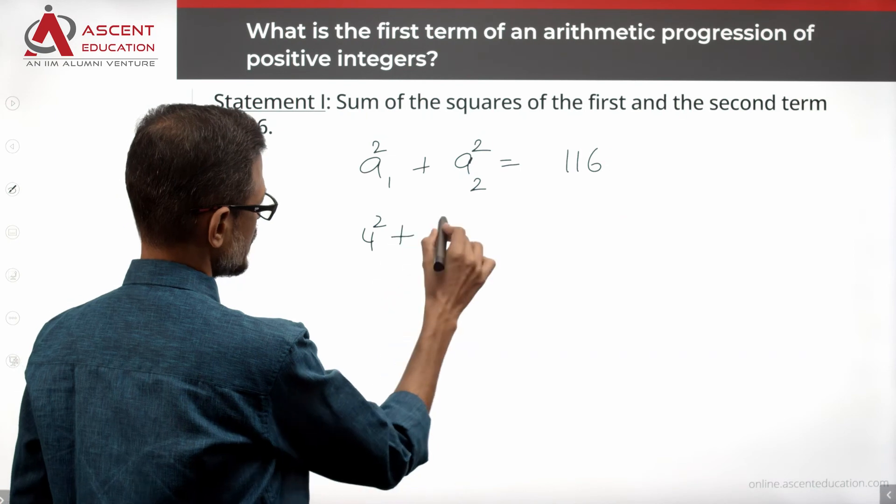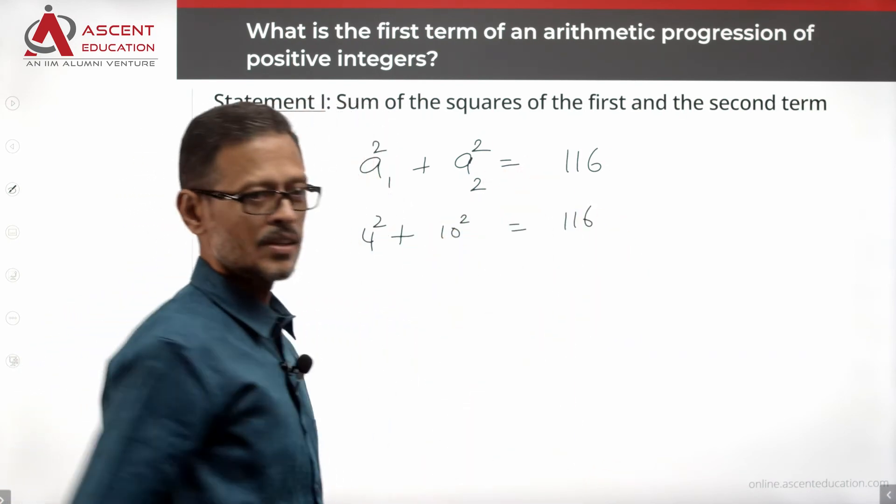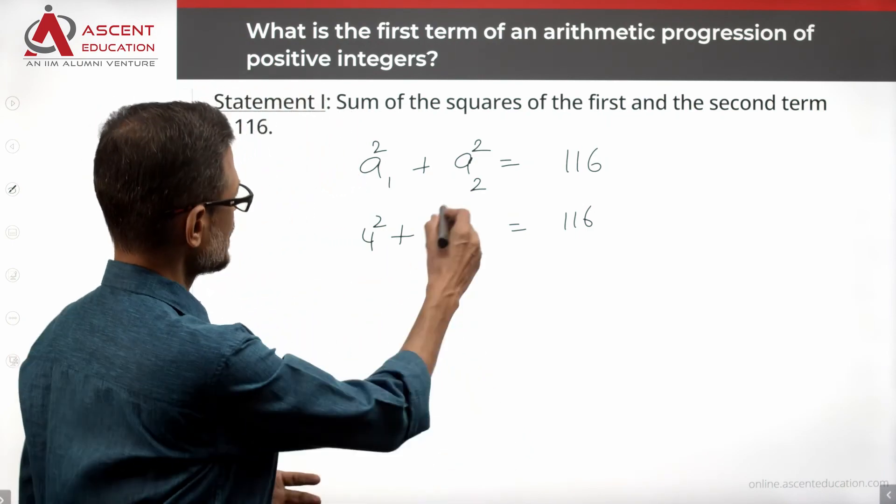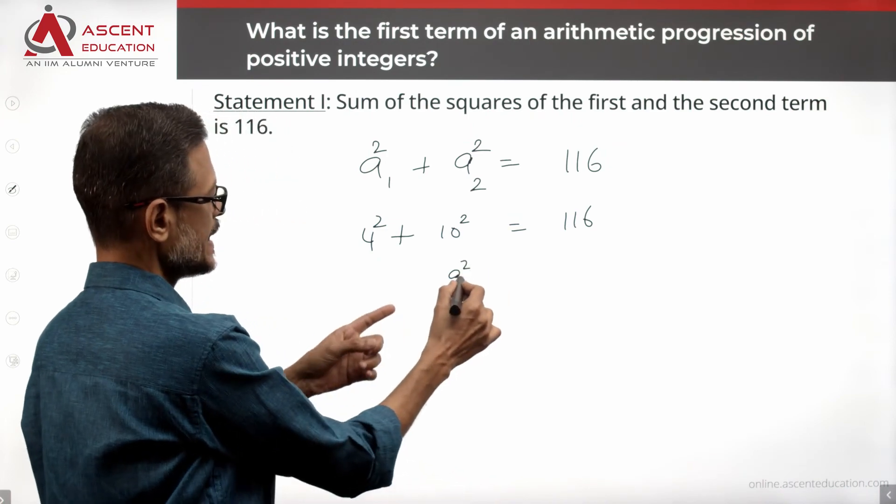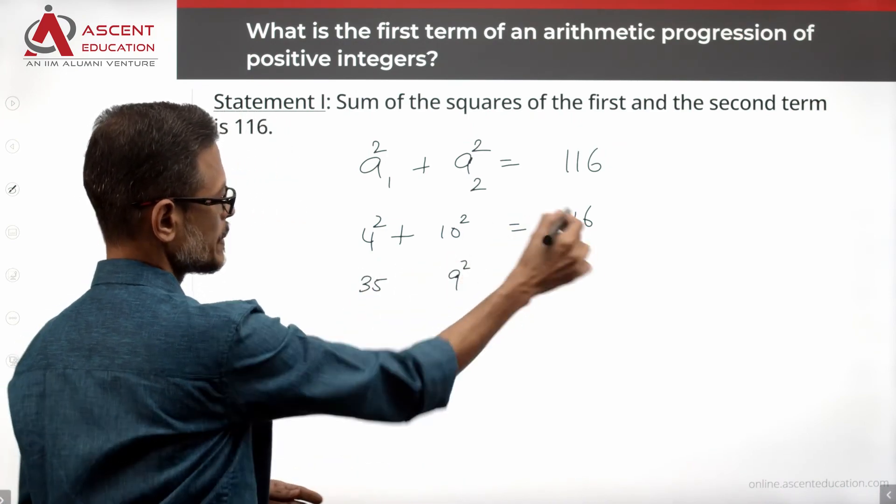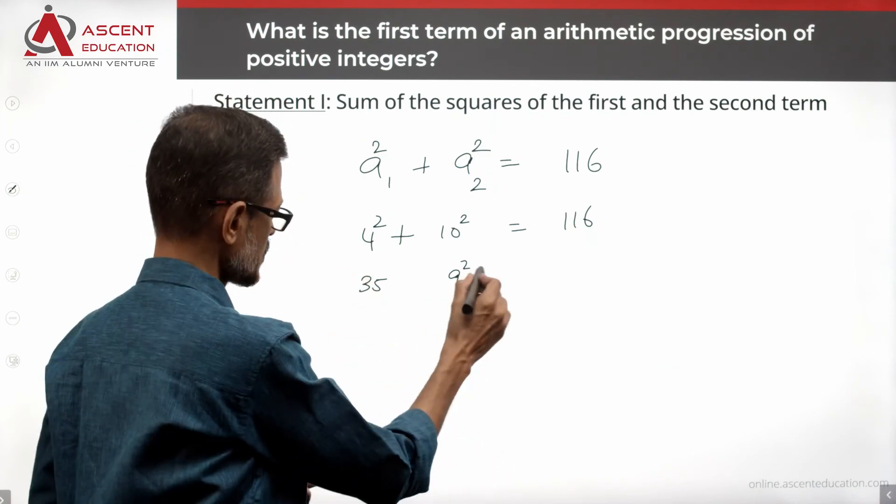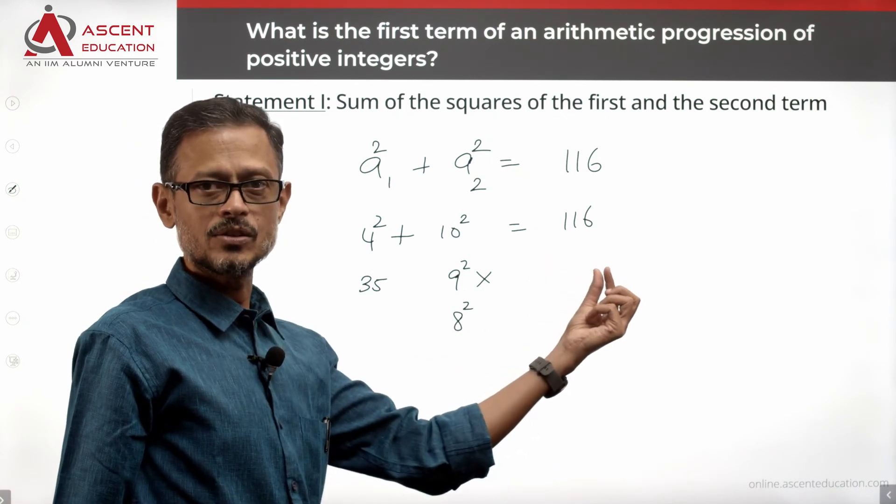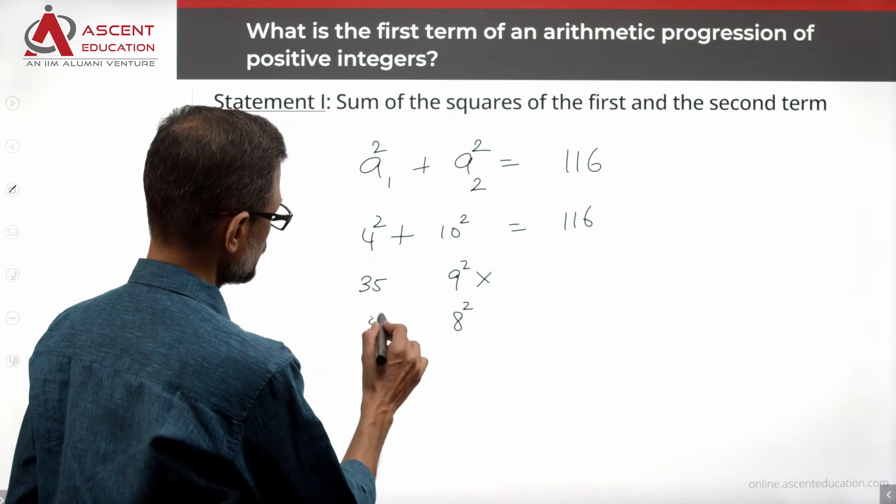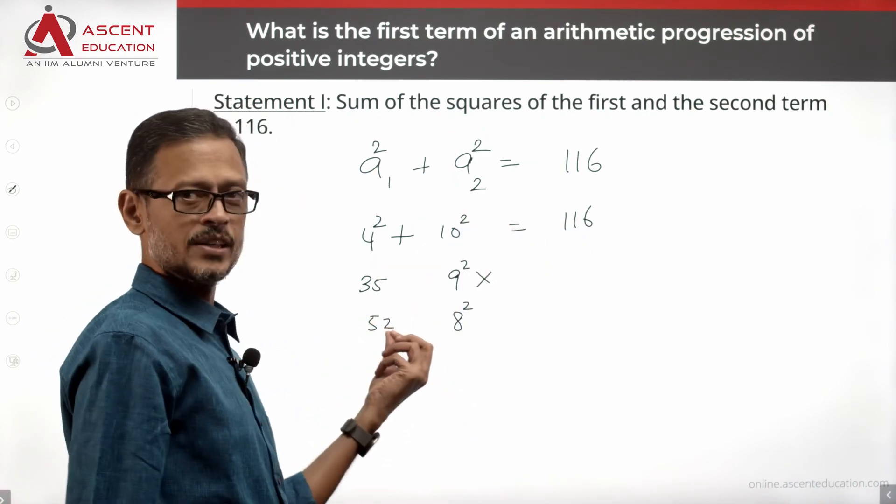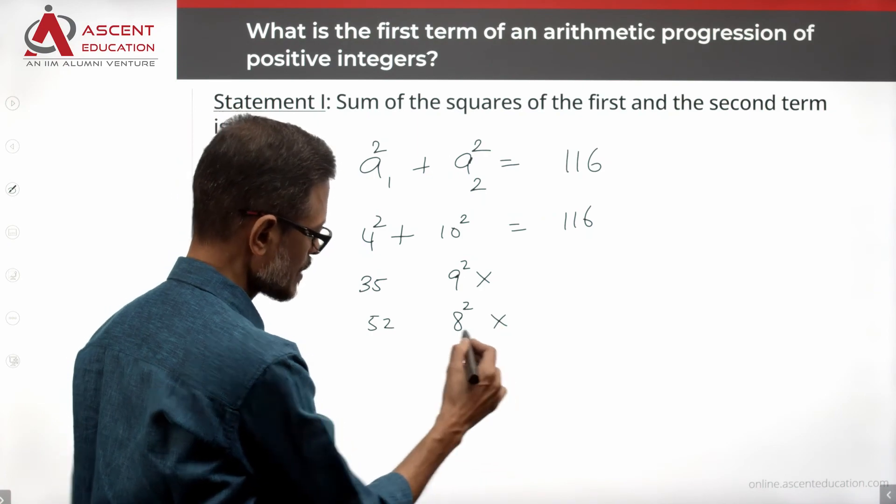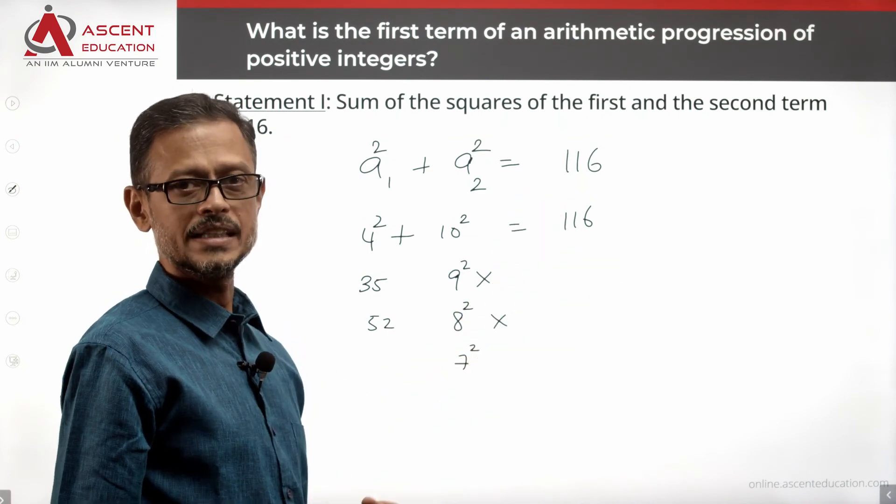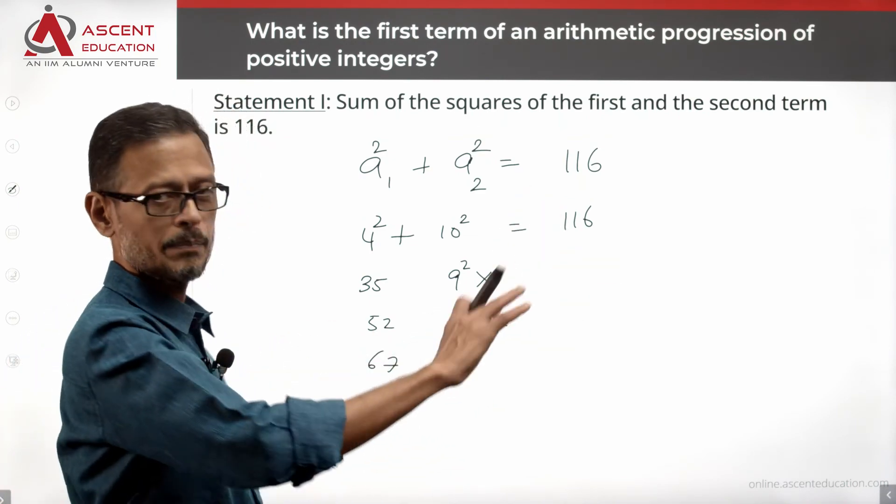4 square plus 10 square is one possibility. So these numbers are 4 and 10. Let's see other combinations. If I take 9 square, that's 81. Then the other number is 35, which is not a perfect square. So this is not a possibility. 8 square, that's 64. Then I need to get 52. 52 plus 64 is what will give you 116, but 52 is not a perfect square. 7 square, 49. The remaining number 67 is also not a perfect square.